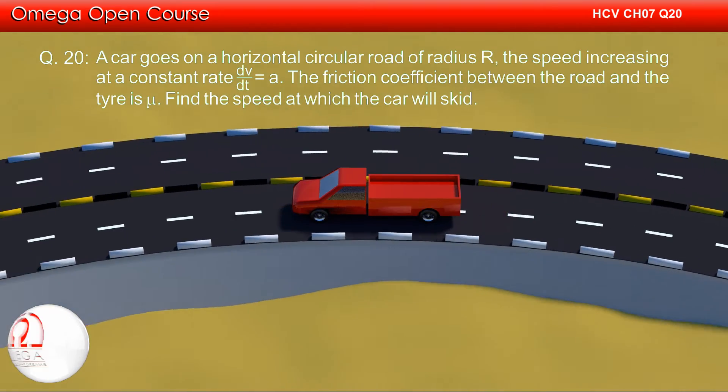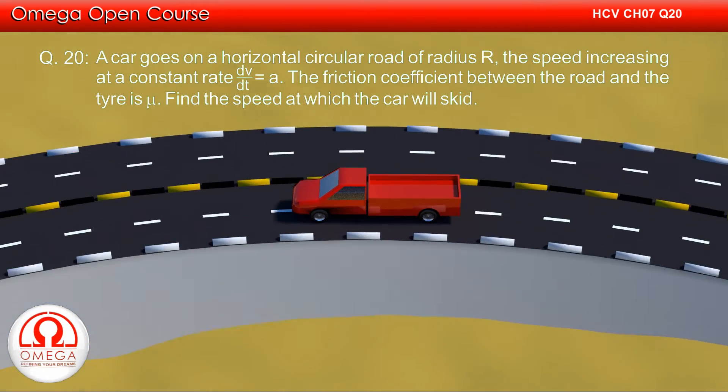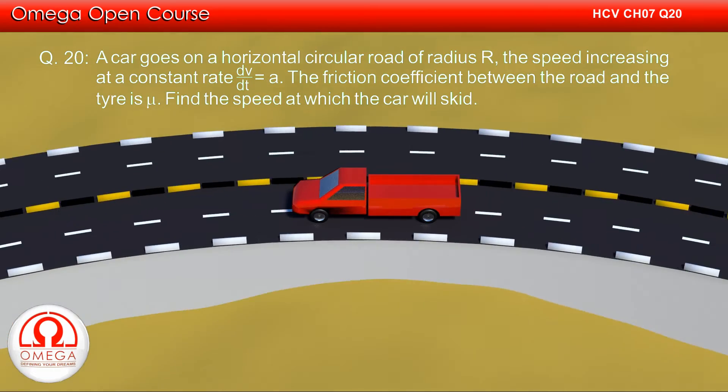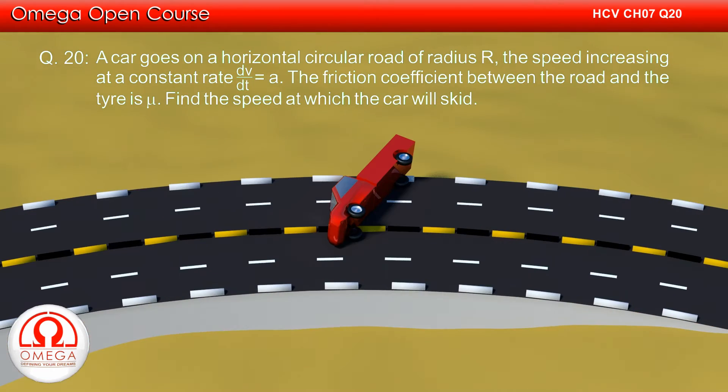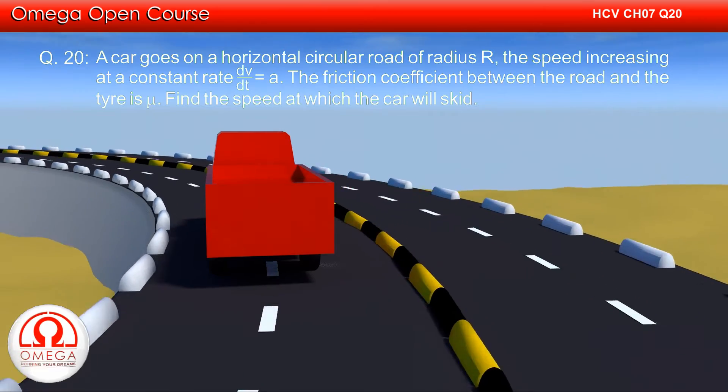A car goes on a horizontal circular road of radius R, the speed increasing at a constant rate a. The friction coefficient between the road and the tire is μ. Find the speed at which the car will skate.